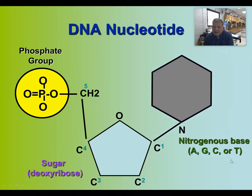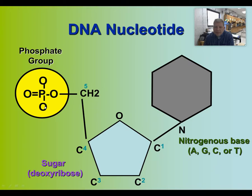The DNA nucleotide also has a nitrogenous base, which could be A, C, T, or G. So one nucleotide consists of a phosphate, a sugar, and a base.